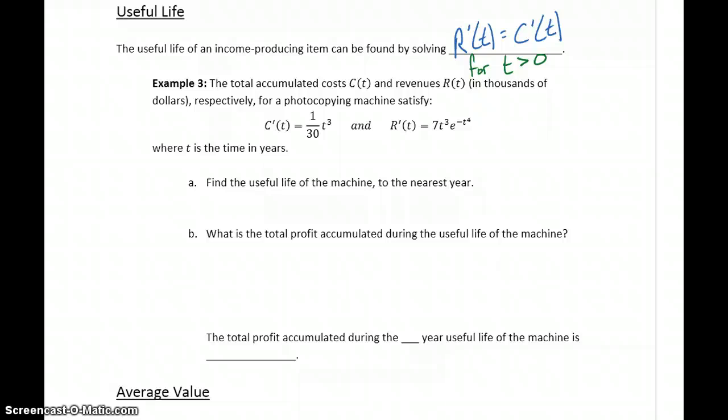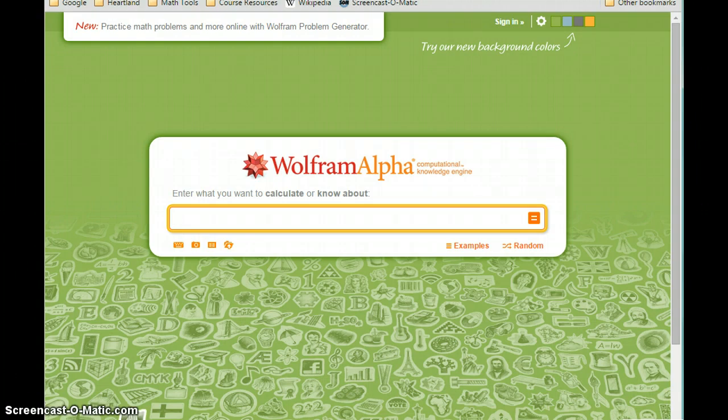In this case, we want to find the total accumulated costs in thousands of dollars for a photocopying machine that satisfies these two marginal costs and marginal revenue functions. First we want to find the useful life of the machine to the nearest year.